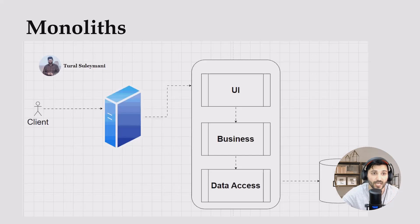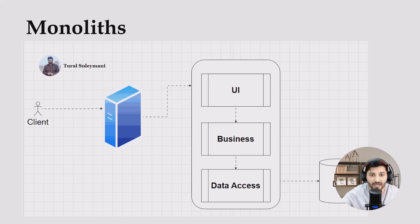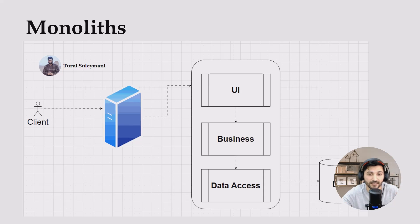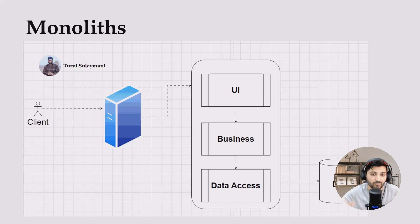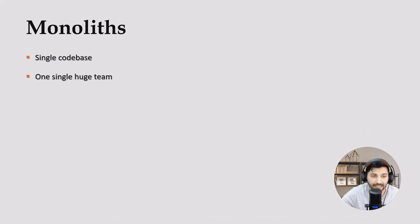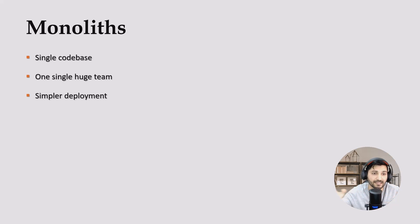In our monolith application we have a general architecture. You can use any architectural style — layered architecture, onion architecture, it doesn't matter. At the end you will have one single code base. In our case we have a UI, business, and data access layer. Our UI will access business in a single process, and the same applies from business to data access. In monolith we have a single code base and one large team working on the application.